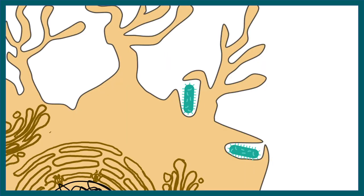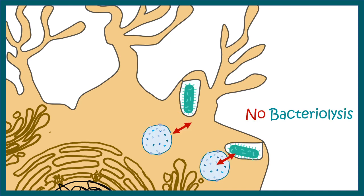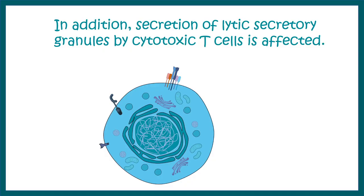Whenever bacteria or viruses invade our body, macrophages and dendritic cells try to engulf that pathogen by phagocytosis. Normally, lysosomes fuse with the phagosome to create a phagolysosome where bacteria are killed by harsh lysosomal enzymes. But in Chediak-Higashi syndrome, this fusion of lysosome and endosome does not take place, so there is no bacteriolysis and the body becomes increasingly susceptible to bacterial infection.